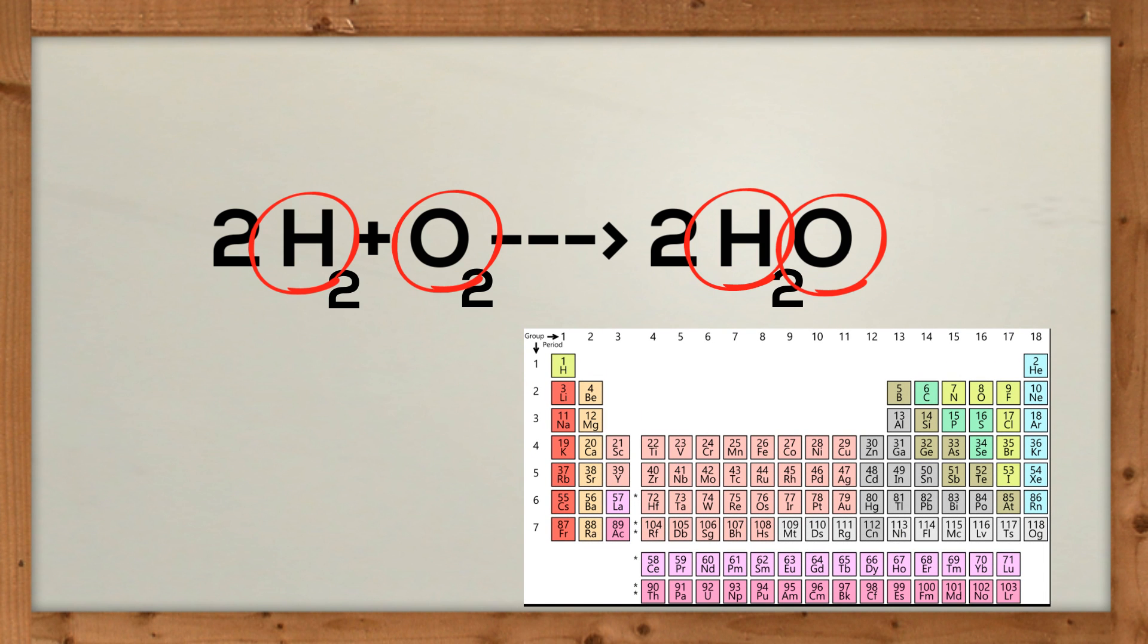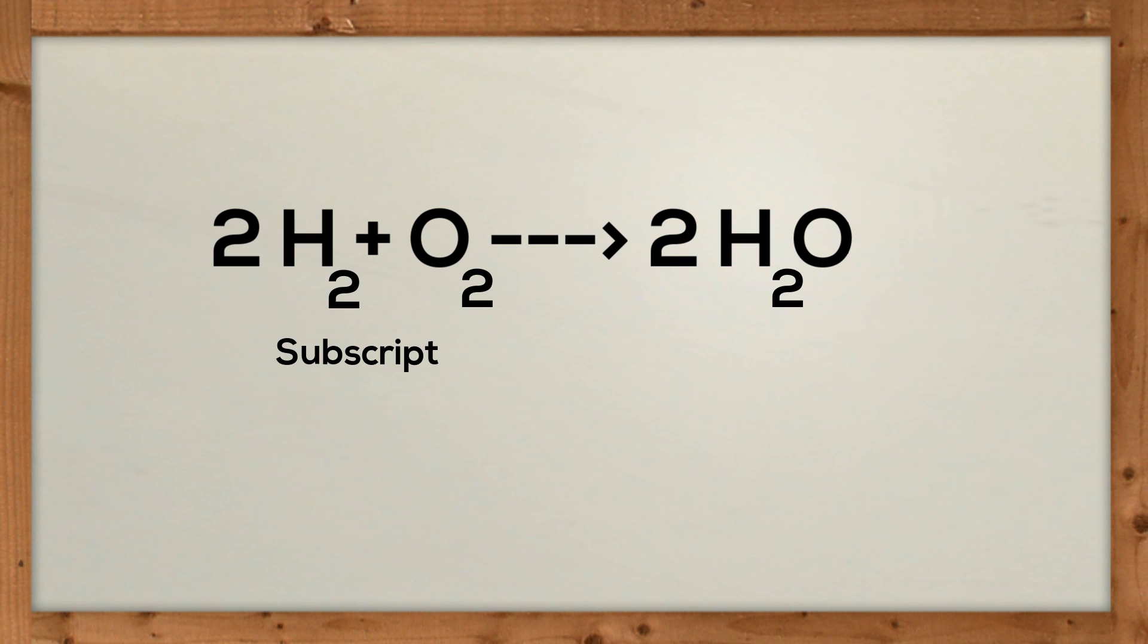A number behind a letter is called a subscript and represents how many ions of the element are in the chemical equation. H2O tells you that the compound has two hydrogen ions and one oxygen.